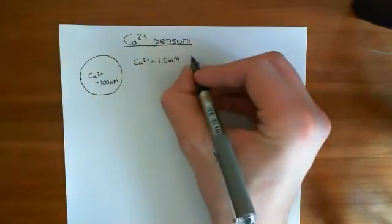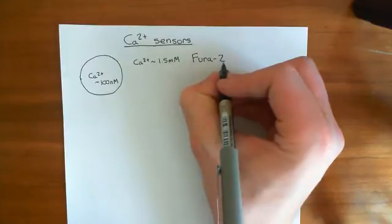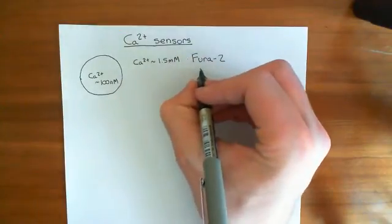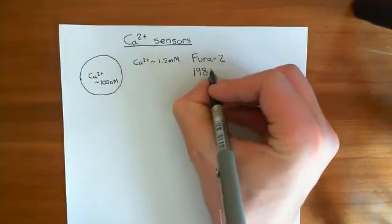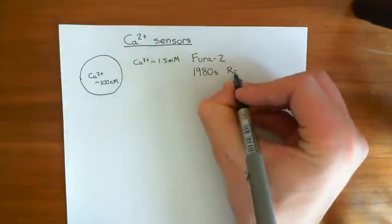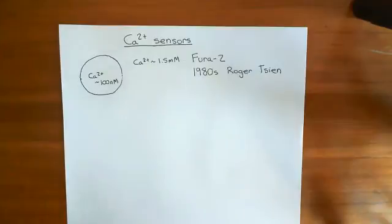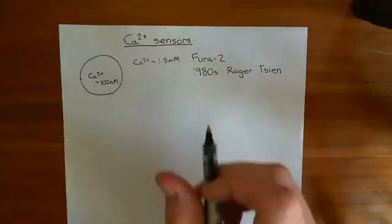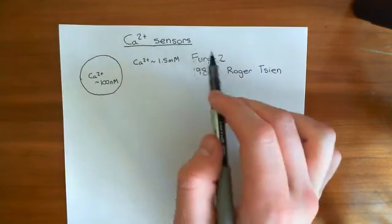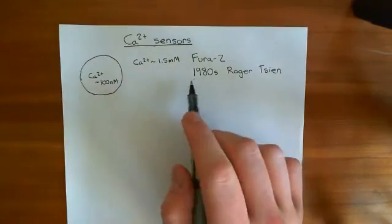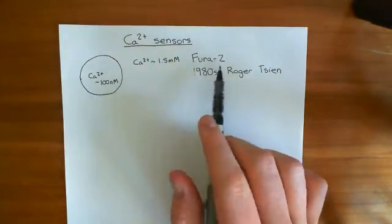The main calcium sensor is a sensor called Fura-2. Fura-2 is a calcium sensor, and we can use it to measure the level of calcium in portions of the cytoplasm. It was developed in the 1980s by a scientist known as Roger Tsien, who is the same scientist who developed most of the cyclic AMP sensors as well. So he's done a lot for the field of calcium and cyclic AMP signalling, and he received the Nobel Prize in 2008 for his work on calcium sensors, i.e. for the development of Fura-2.